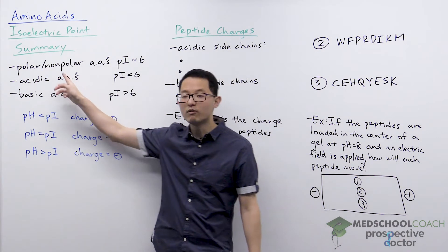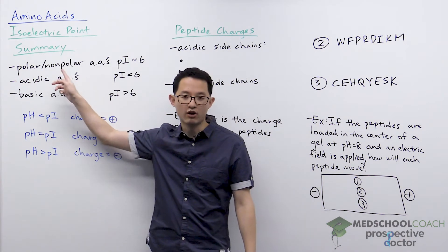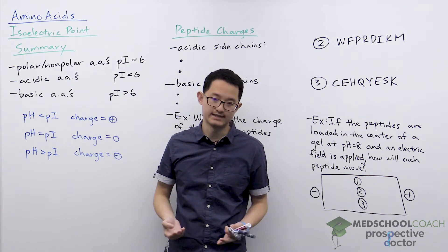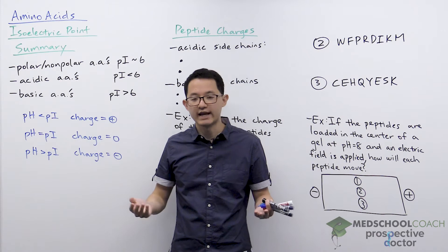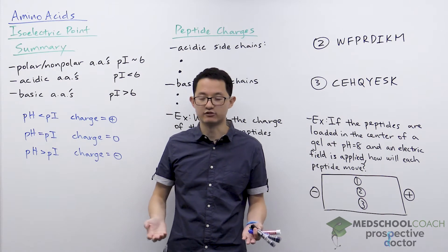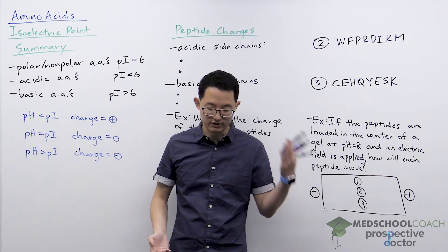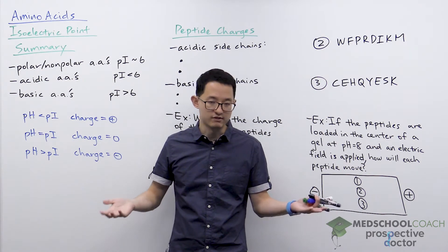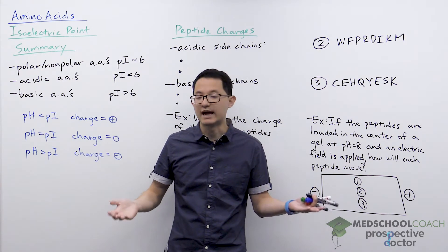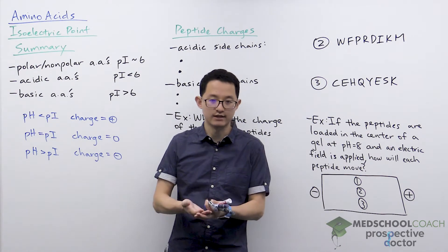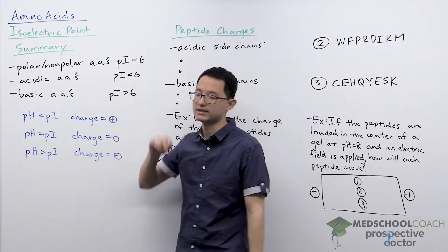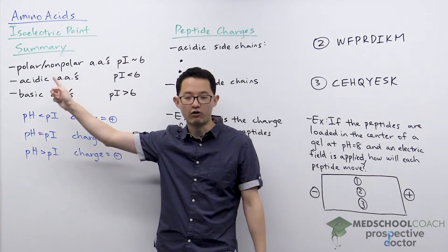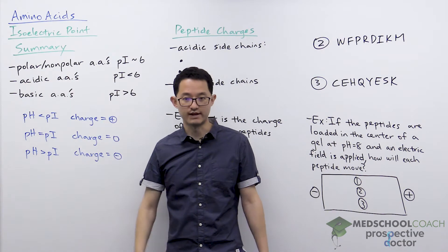First of all, all polar and nonpolar amino acids may have an isoelectric point of about six, and that's just because they only have two acidic groups to consider: the carboxyl group, which has a pKa of about two, and the amino group, which has a pKa of about nine to ten. So when you calculate the isoelectric point, you always get a value of about six for all polar and nonpolar amino acids.